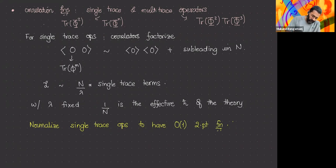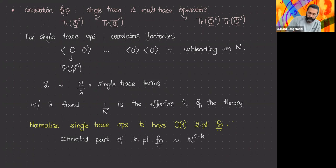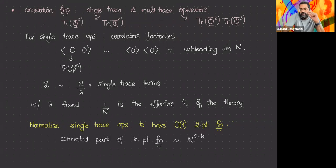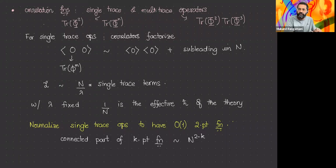The connected part of a k-point function of single-trace operators scales as N^(2−k). This means that high-point correlators are suppressed in the 1/N limit. A corollary: for the large-N limit to make sense, not only do the planar diagrams win, but you also want OPE coefficients to scale suitably in the 1/N limit. If OPE coefficients grow, the factorization would break down.